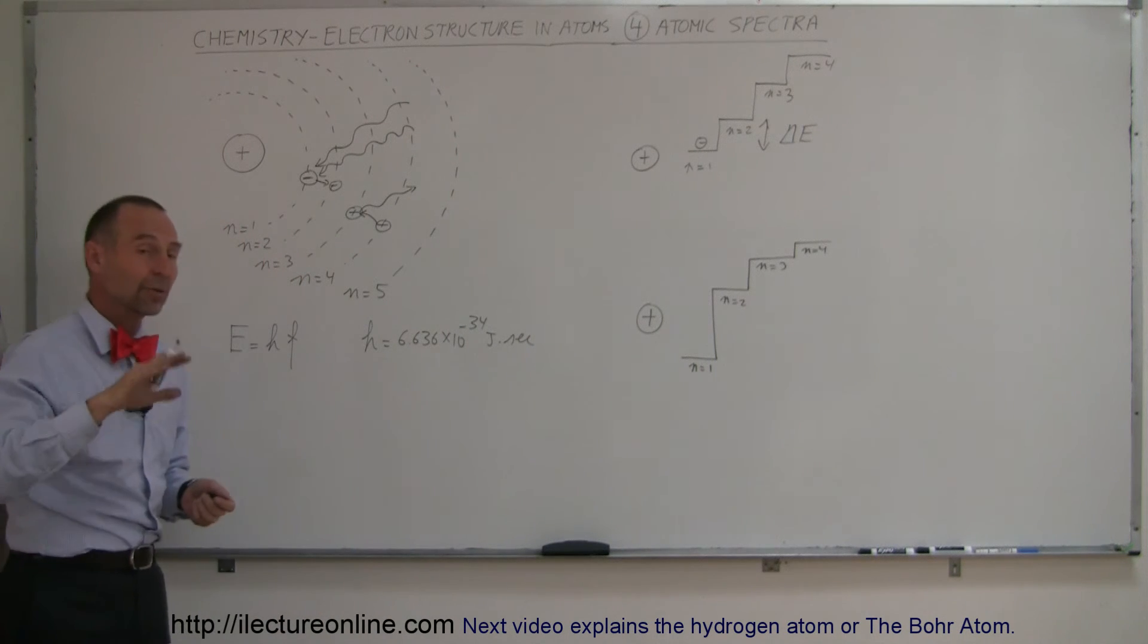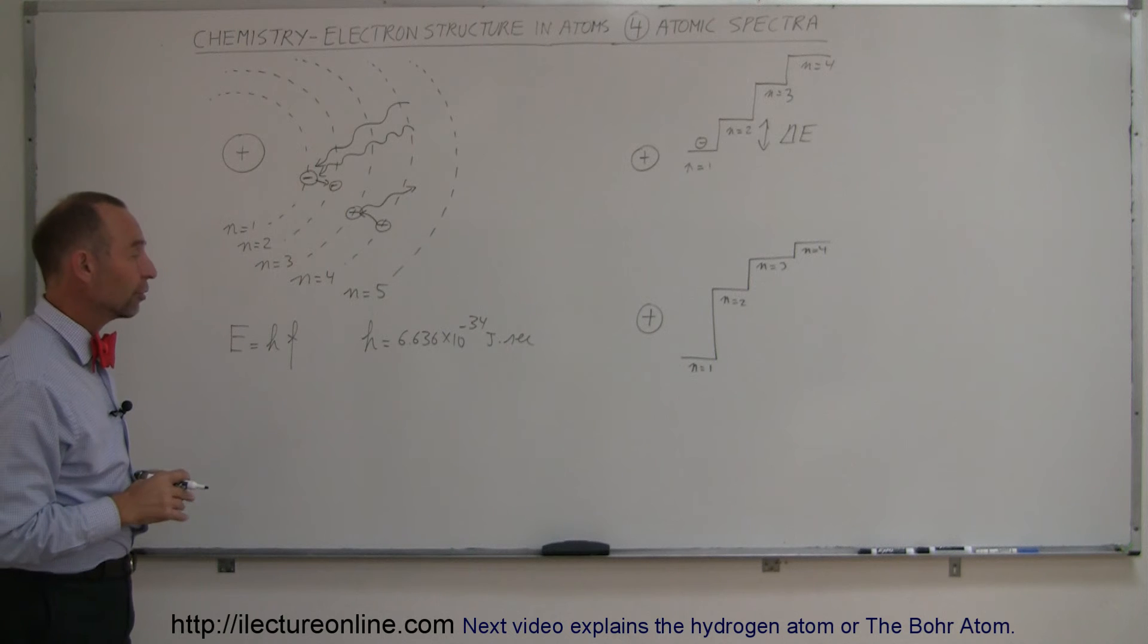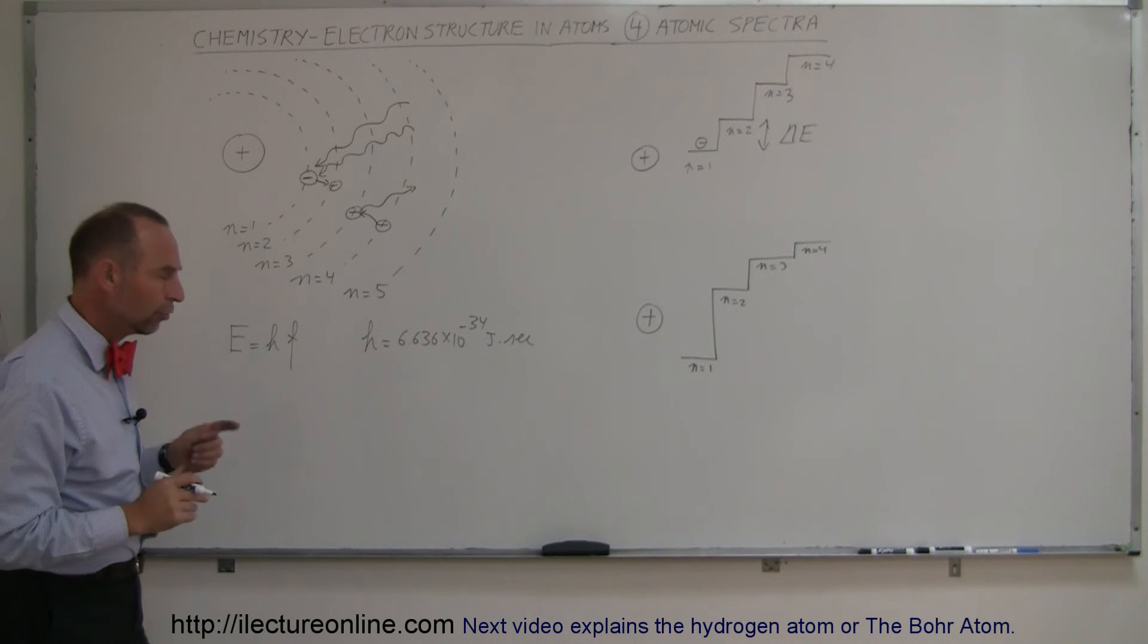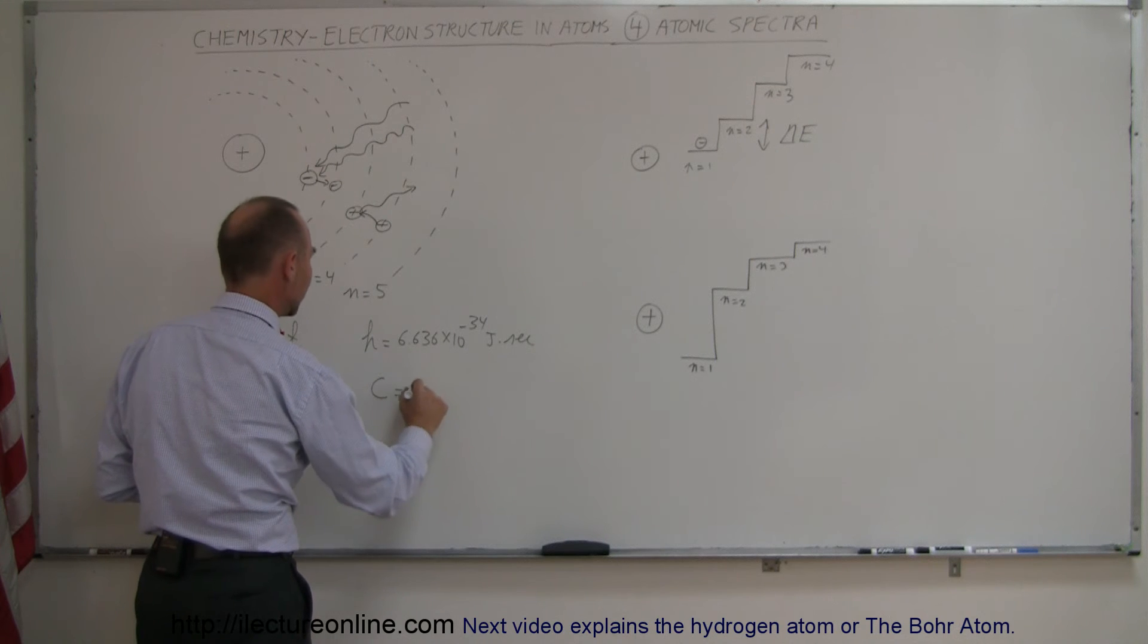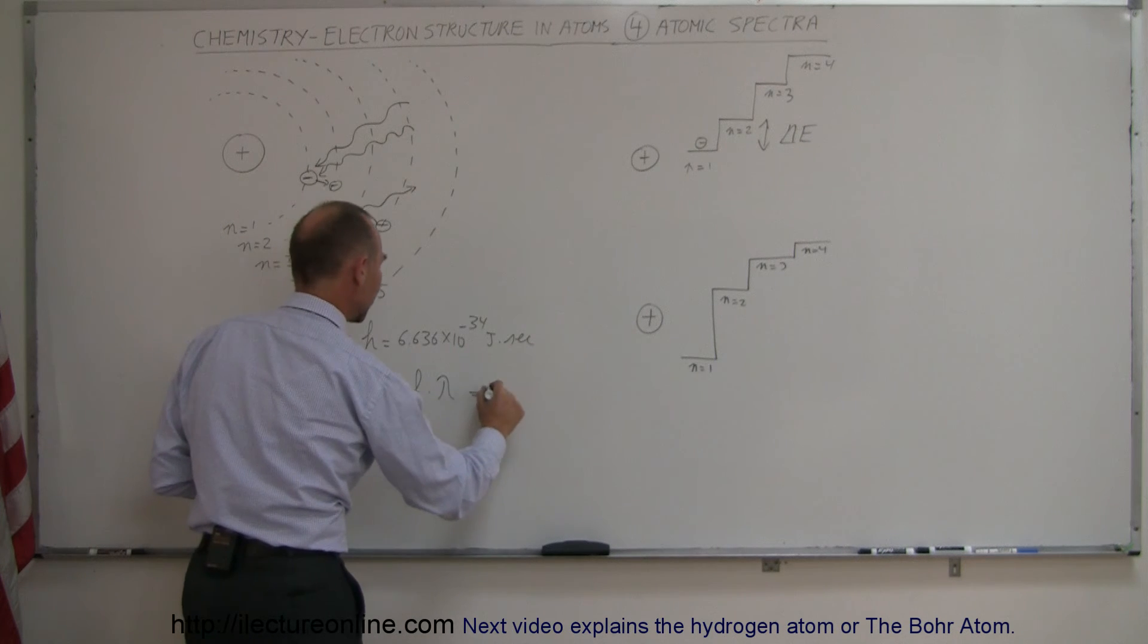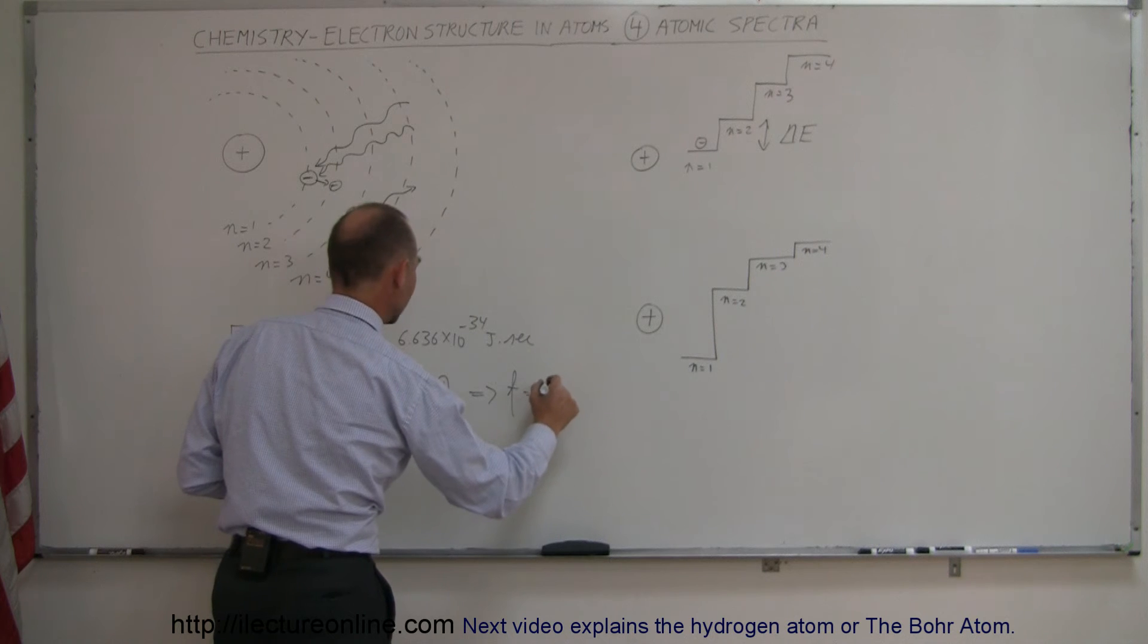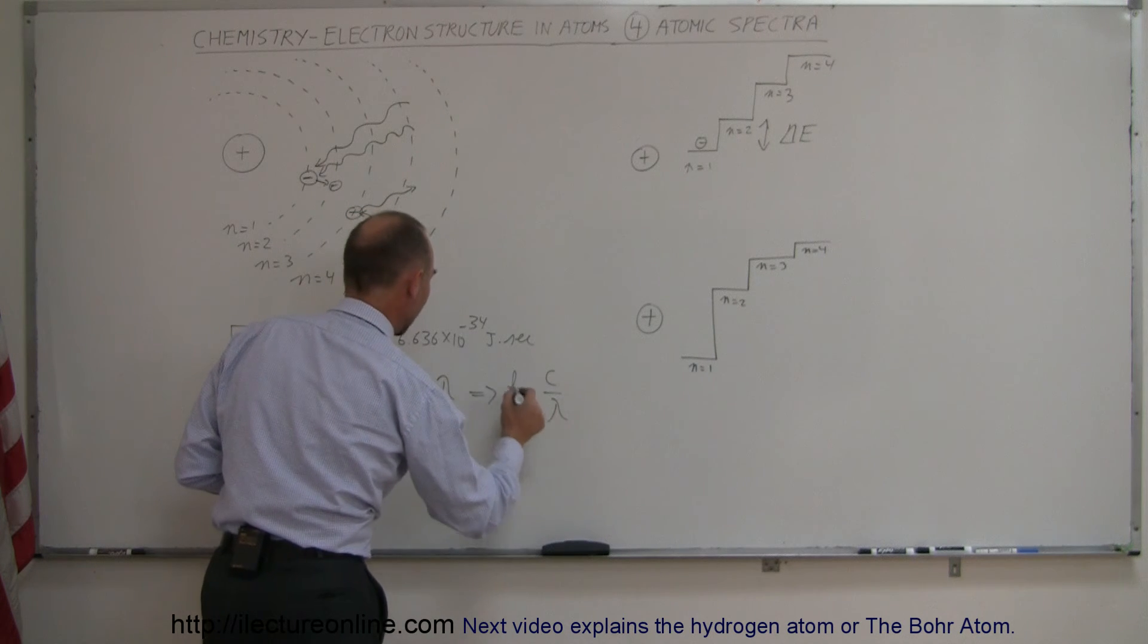And, of course, the frequency is the frequency of the oscillations of the photon. Now, also know that the velocity or the speed of light of a photon is equal to the frequency times the wavelength in such a way that the frequency can be written as C divided by lambda.